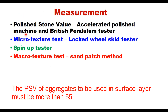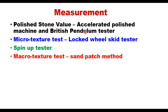The first is Polished Stone Value (PSV), which can be done either in the laboratory on aggregates to be used in the road surface, or in the field to determine the skid resistance of the surface layer. The second is the locked wheel skid tester, which is a micro texture test. The third is a spin-up tester, which is similar to the locked wheel skid tester. The fourth is a macro texture test determined by the sand patch method.